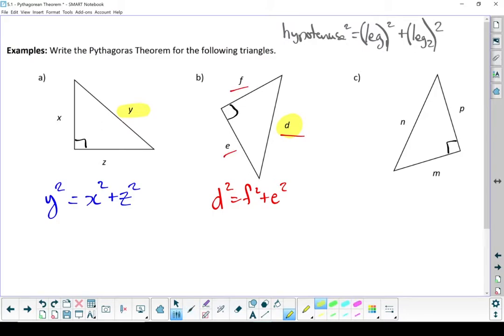Question C. Our hypotenuse is N. Because this right angle points at it, we have N² equals - and I'm going to use the other two legs now - P² + M². There's my Pythagorean Theorem for all these questions.